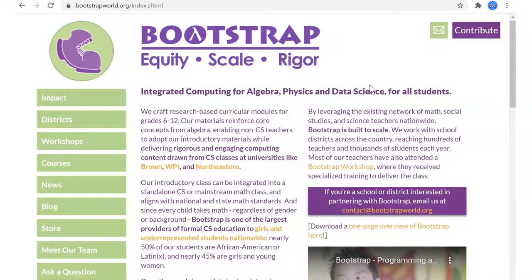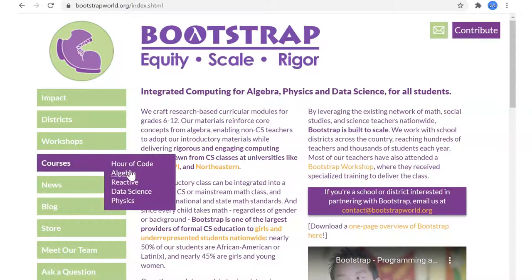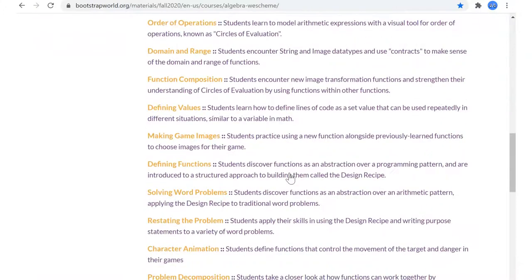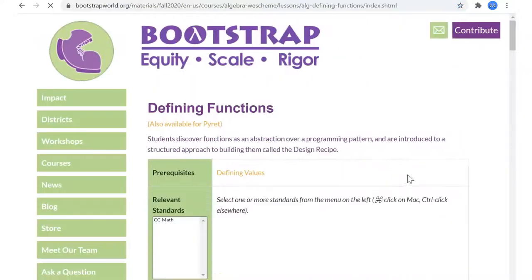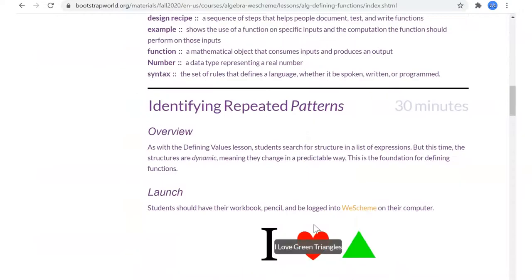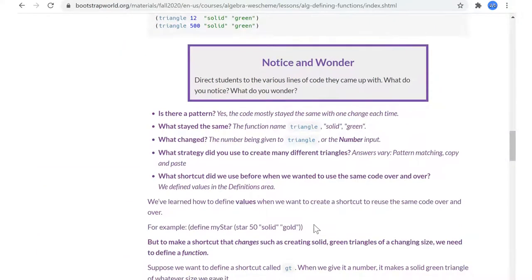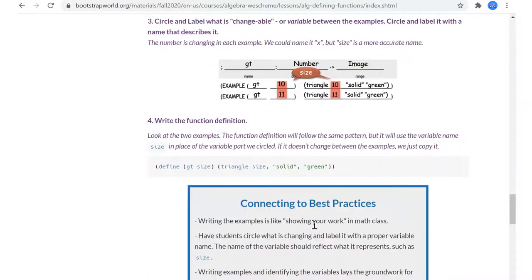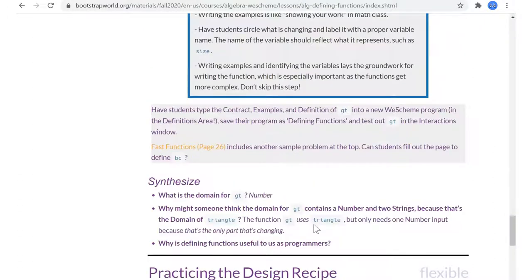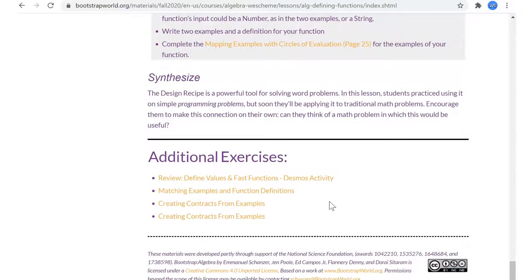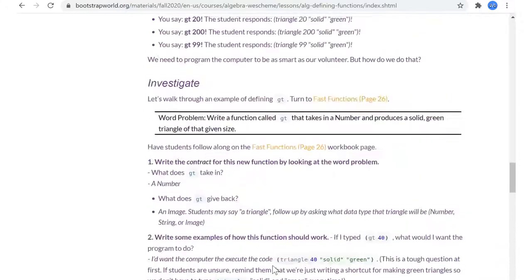So let's prep for Bootstrap Algebra, Lesson 9. Let's look at last time. We worked on defining functions. We introduced the design recipe. Students got to write some of their own functions using the design recipe. We introduced the example function and they practice creating contracts and definitions from examples.